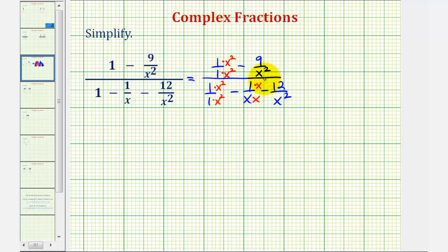Notice all the denominators are now x squared. So the denominator on top would be x squared, and the numerator would just be x squared minus nine. Looking at the bottom, again, our common denominator is x squared. The numerator would be x squared minus x minus twelve.